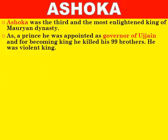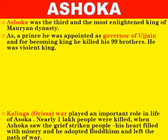As a prince, Ashoka was appointed as governor of Ujjain. Bindusara had many sons, and every prince was appointed governor of a territory first to gain experience in dealing with people and administration before being promoted to king. To become king, Ashoka killed his 99 brothers, who were his competitors. He was a very violent ruler at that time.